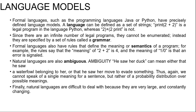Natural language is also ambiguous. For example, "he saw her duck" can mean either that he saw a waterfowl belonging to her, or that he saw her move to avoid something. Thus we cannot speak of a single meaning of a sentence, but rather of a probability distribution over possible meanings. Finally, natural languages are difficult to deal with because they are very large and constantly changing, so our language models are at best an approximation.